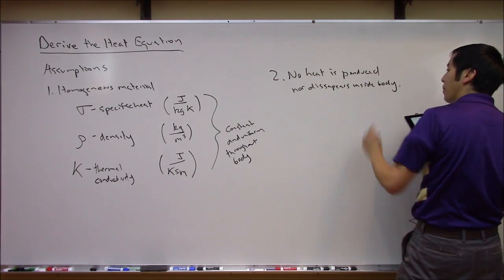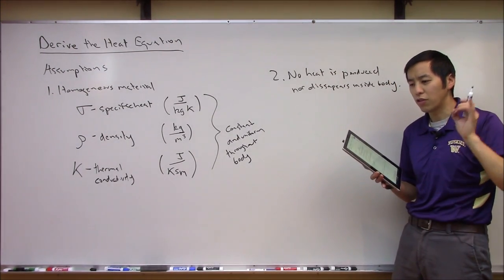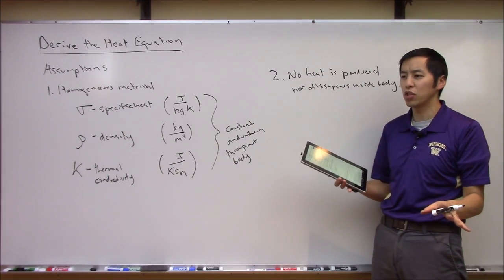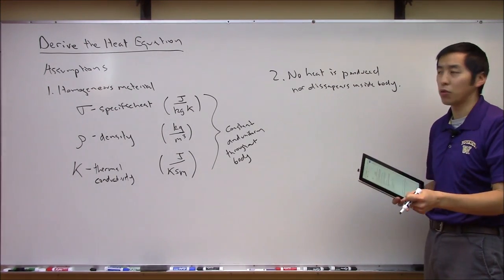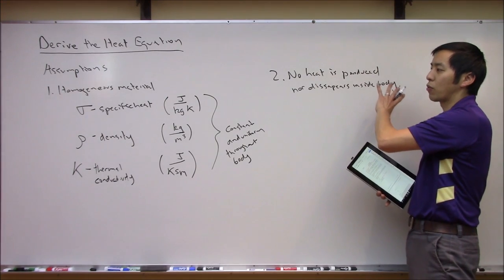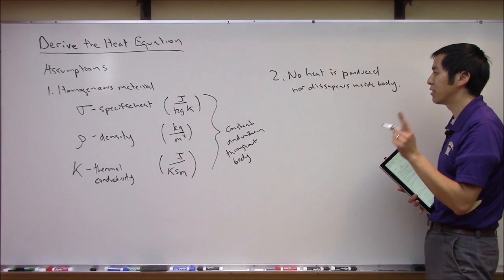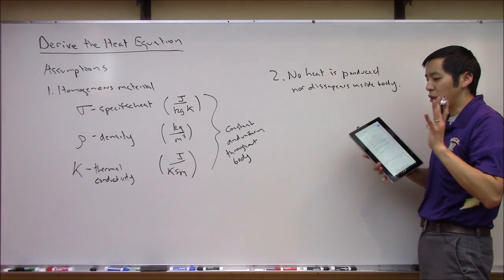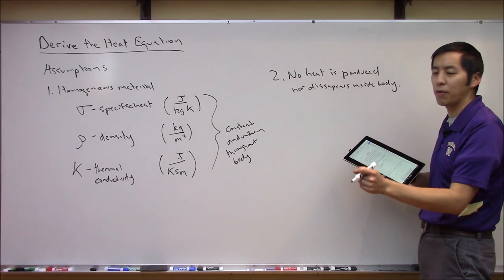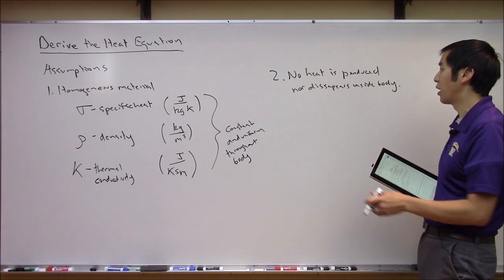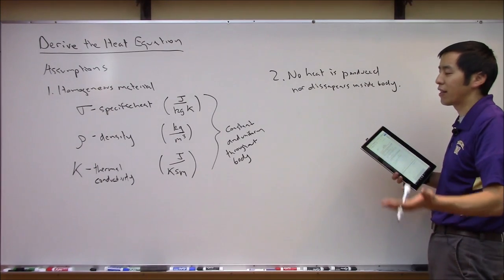In our physical demonstration earlier, I was very careful to only start the experiment after imposing an initial temperature condition and then stopped adding heat. If you're shooting the bar with a blowtorch, you are definitely adding heat to the problem and the rest of this derivation goes out the window. So we want a situation where you have a body with some temperature variation, hit go, and see what happens — with no heat being produced by combustion or anything else.